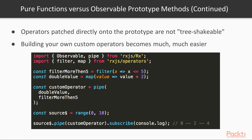A pipeable operator is just a function, so it becomes easier to combine existing operators into custom operators with specific logic. Take a look at this example. We generate values from 0 to 9 with the range factory function. But we want to double each value and then filter values that are bigger than 5. It can be done with existing operators — map and filter. But if you need that functionality quite often in your application, you can compose them into a custom operator and then use it in any place of the codebase to reduce the amount of code.